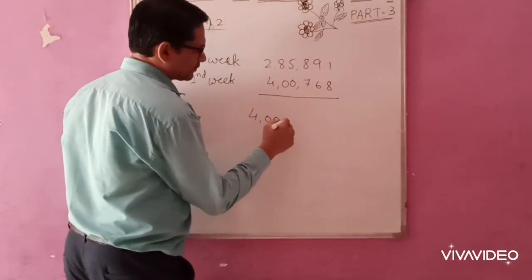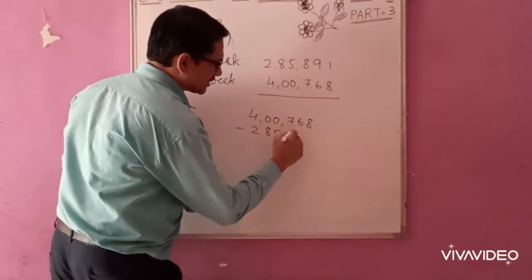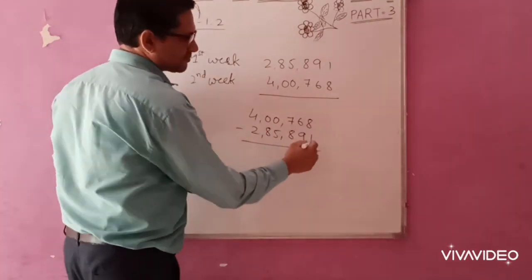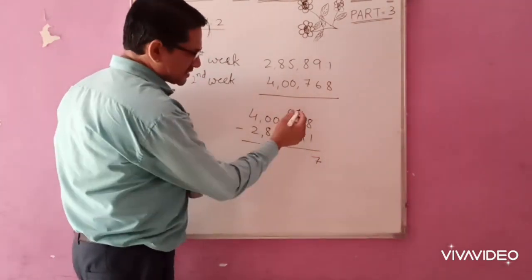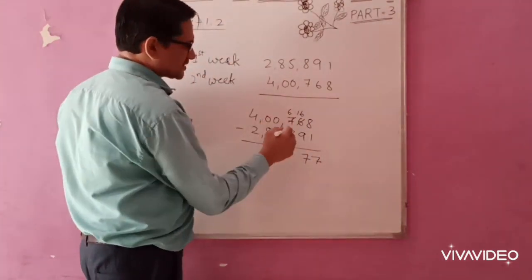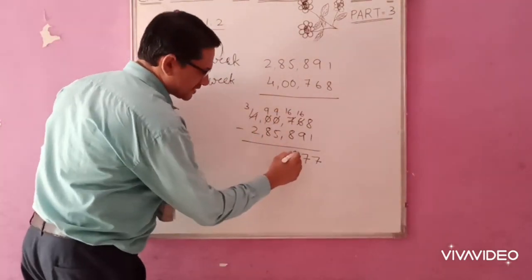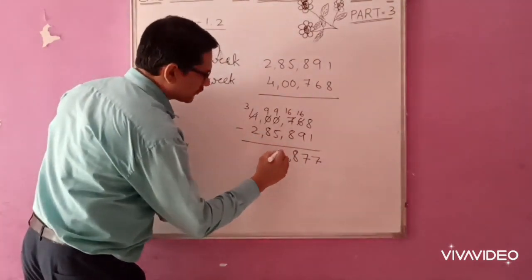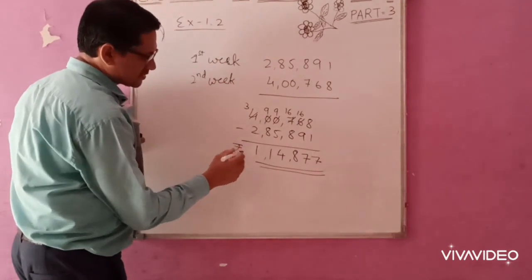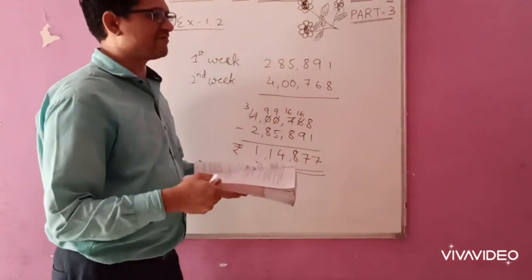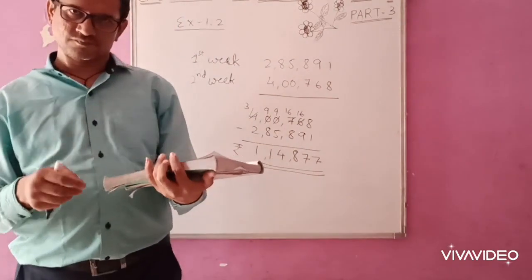So 4,00,000 is the bigger number. So 4,00,768 minus 2,85,891. Now if you subtract these, 8 minus 1, it is 7. 6 minus 9, not possible. So 16, borrow from here. 16 minus 9 is 7. 6, 0, not possible. So it will be carrying from here. 9, 9, 16. 16 minus 8, it is 8. 9 minus 5, it is 4. 9 minus 8, it is 1. 3 minus 2, 1. So, rupees 1,14,877 he sold more in the second week. That is for this video.